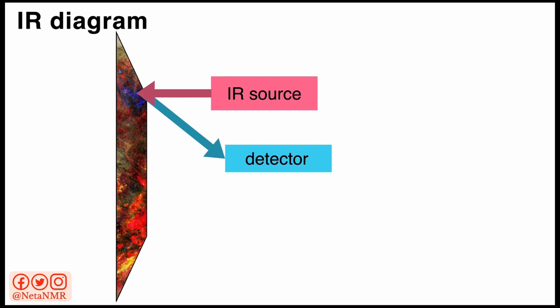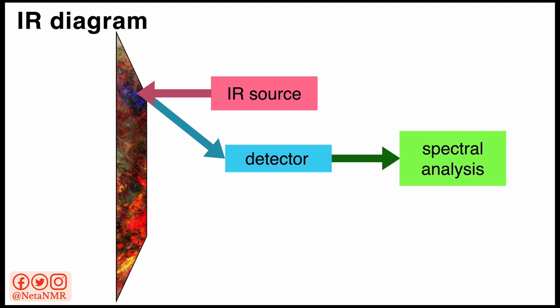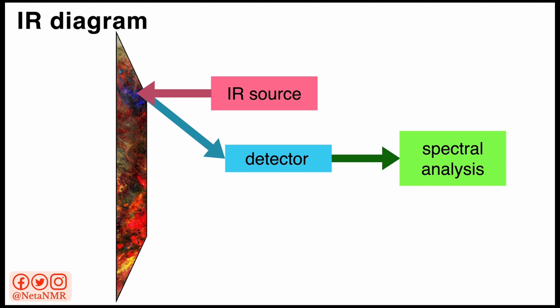This recorded signal is then analyzed and we obtain spectra. And from the IR spectra, we can extract information about the chemical groups that are present in the sample. And then, by comparing those spectra to reference spectra of known compounds, we can identify the composition of the sample.